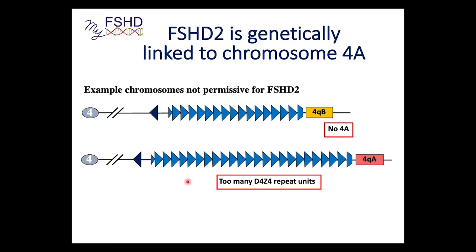You might have the SMCHD1 mutation, but if you have 25 or 30 repeat units — some people have up to 100 or even 120 — those can just be too big for FSHD2. We're not exactly sure why; probably they still get some degree of repression.